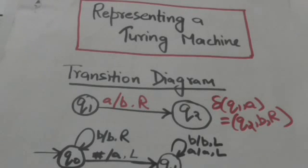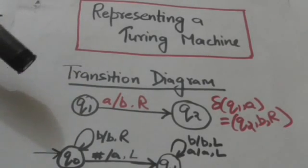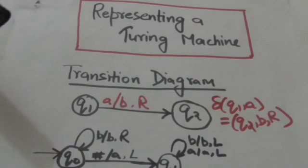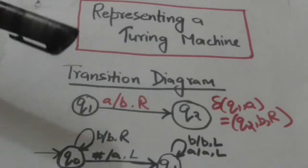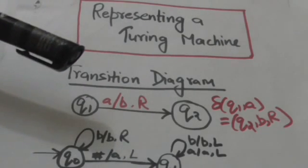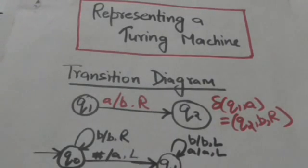In this tutorial we will study how we can represent a Turing machine. A Turing machine can be represented graphically by a graph called the transition diagram of the Turing machine. Nodes of the transition diagram represent the states of the Turing machine, and directed labelled edges represent transitions.